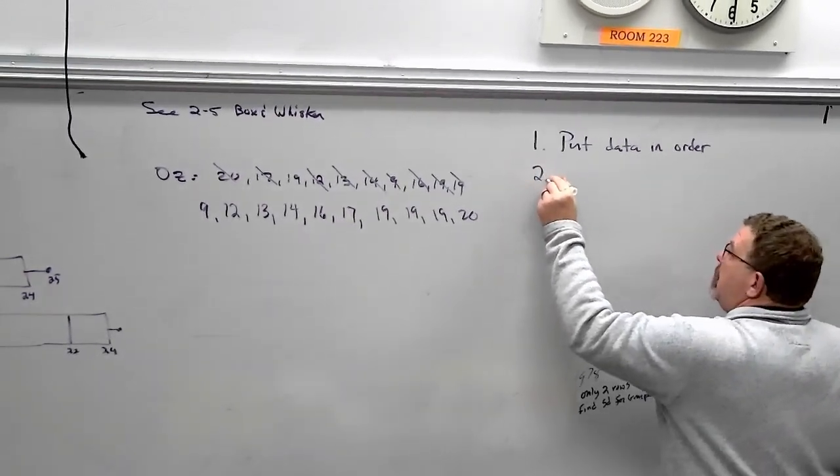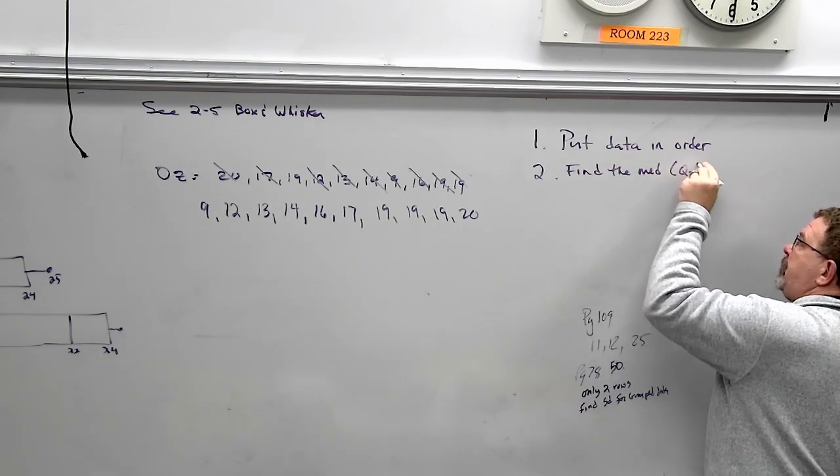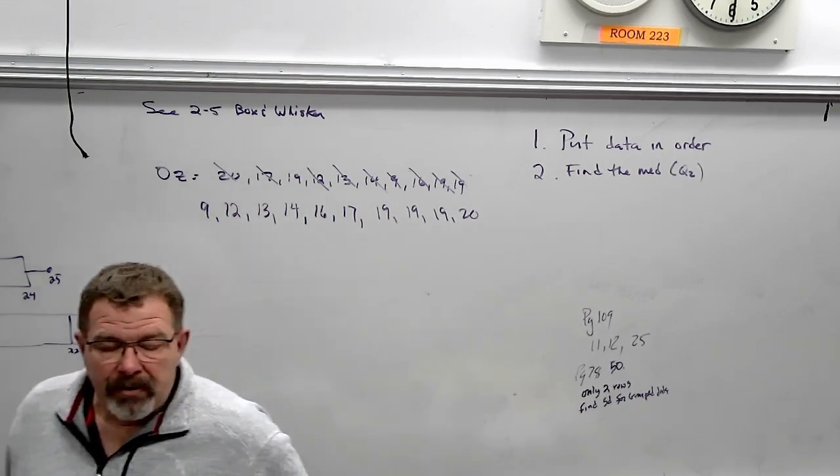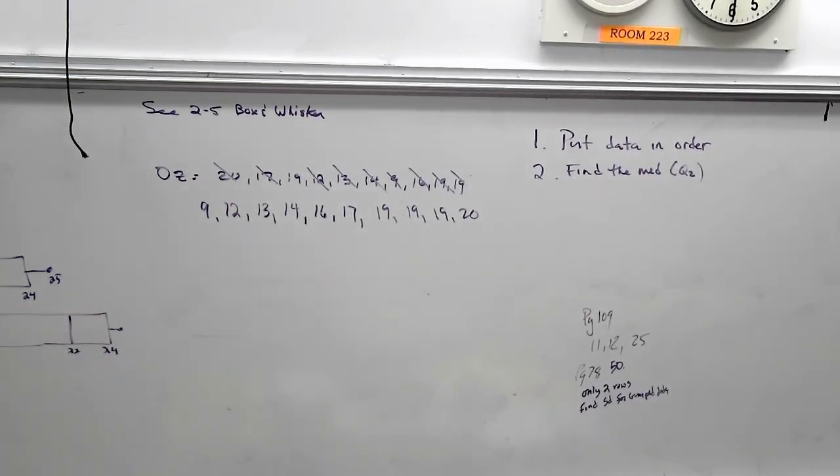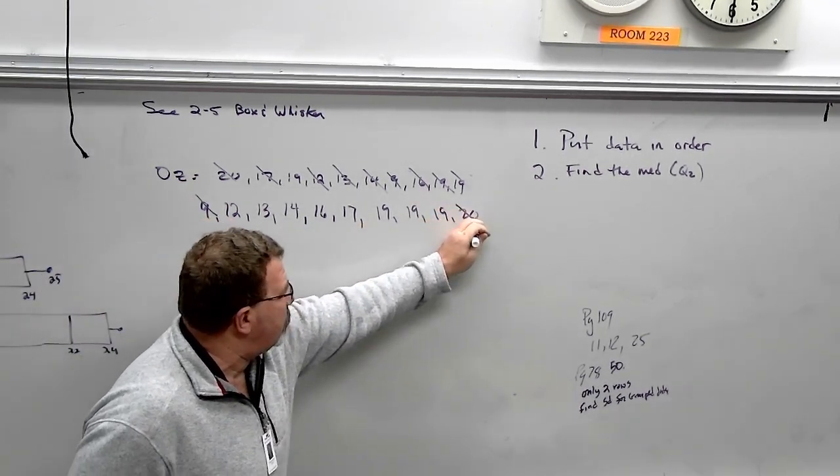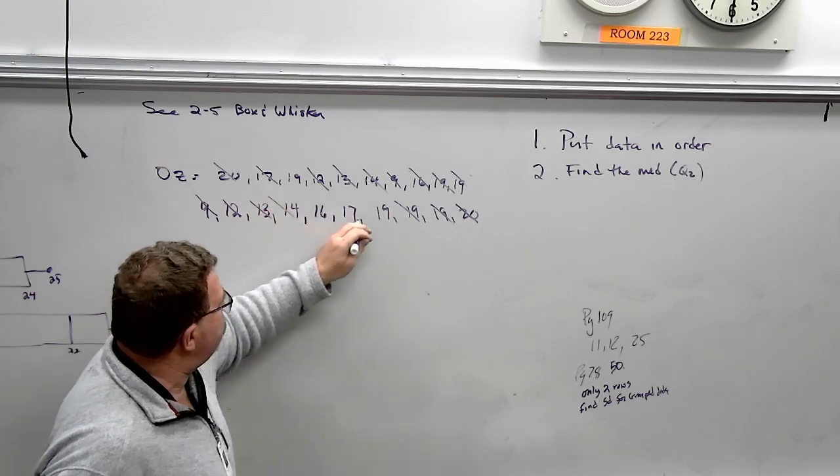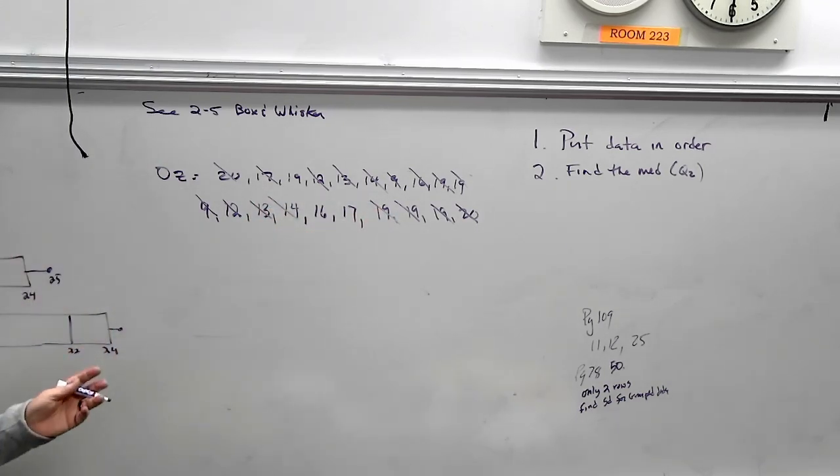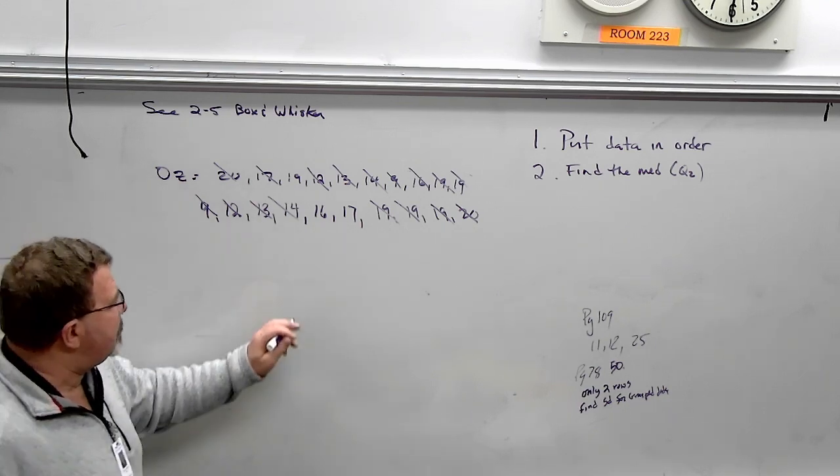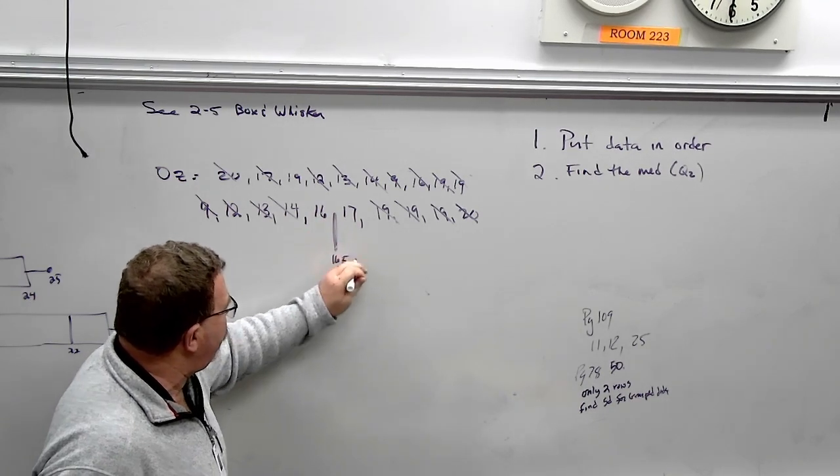Step two. Find the median. Some textbooks will call this Q2. Quartile 2. Q represents quartile. Because a box and whisker plot breaks up your data into quarters. 25%, 25%, 25%, 25%. Okay, so here we go. Now, don't scribble your numbers out. Only put a slash through them because you have to use them more than once. So don't cross it off where you can't read it. So notice I have two numbers left. What is the middle of 16 and 17? 16.5. Now, notice what I do. I put a line right between those, and I just say 16.5.